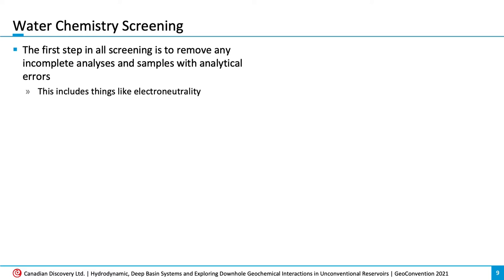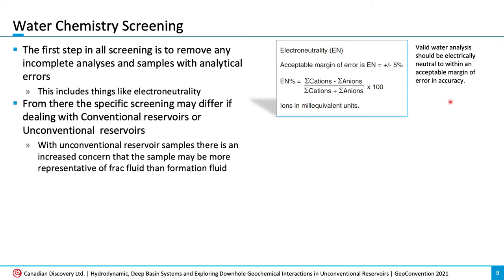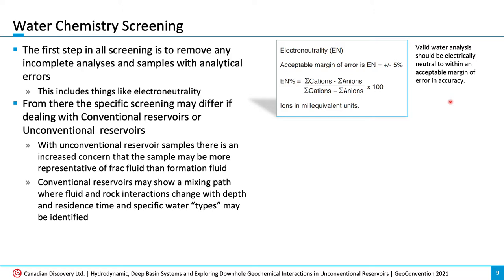Before using water data, it is important to know how to screen the data and try to determine what is actually representative of formation water. The first step is to remove any incomplete analyses and samples with analytical errors. One of these screens is looking at electroneutrality. There are also different steps to be taken depending on whether the sample is from an aquifer, a conventional reservoir, or an unconventional reservoir. In unconventionals, water is no longer the continuous phase, so finding and identifying formation water can be more difficult, and there is an increased concern that the sample will be more representative of frac fluid than formation water. In a conventional aquifer, the better samples are generally taken from DSTs or wells with significant water production and generally have less concern over being a representative sample.